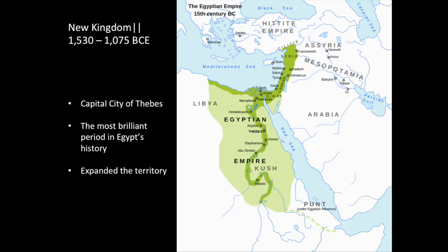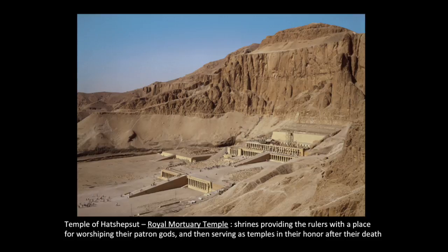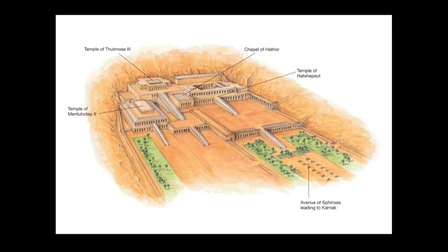After the Syrians are kicked out, we come to the New Kingdom with the capital city of Thebes — the most brilliant period in Egypt's history. They expanded Egyptian territory all the way into the Saudi Arabian Peninsula, ascending borders from the Euphrates River in the east deep into Nubia in the south. This royal mortuary temple was built for one of the most remarkable women in history, Queen Hatshepsut. Possibly built by the royal architect and her lover Senmut, it is incredibly well suited to its natural setting and includes colonnades, pillars, and terraces.